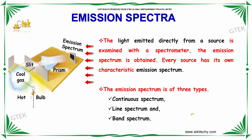Now we will talk about emission spectrum. The light emitted directly from your source, examined through a spectrometer, gives the emission spectrum. Every source has its own characteristic emission spectrum. You can see a light bulb via a cool gas, via a slit — it hits a prism and you get your emission spectrum.